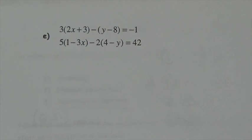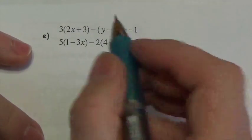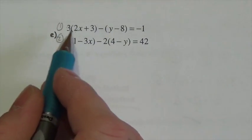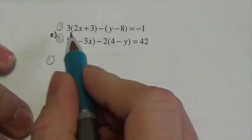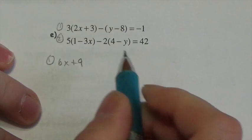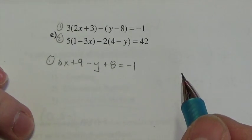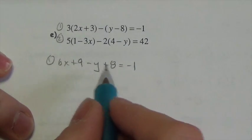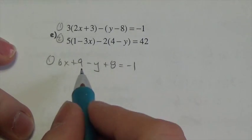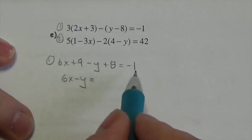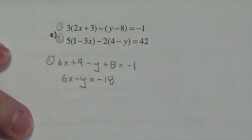Here's another example that needs some work before we solve it. Here's equation one and equation two — there's a lot more going on here. These binomials have coefficients out front, so let's simplify. Equation one: distributing gives 6x plus 9, then distributing the negative 3 gives negative y plus 8 equals negative 1. Bringing like terms together: 6x minus y, and 9 plus 8 is 17, subtract from both sides gives negative 18. So the simplified equation one is 6x minus y equals negative 18.